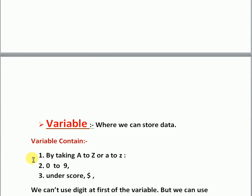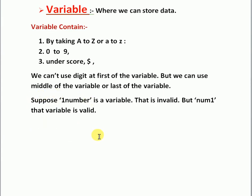A variable is where we can store any data. We can write a variable name using capital or small letters A to Z, digits 0 to 9, underscore, and dollar sign. That is your choice. However, there is one restriction: you can use a digit anywhere in a variable name except at the very first position. You cannot use a digit as the first character of a variable name, but you can use it in the middle or at the last position.